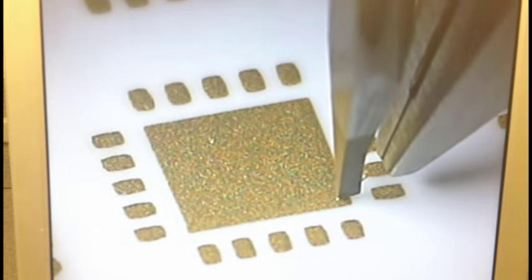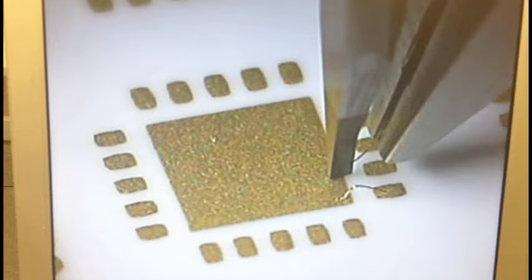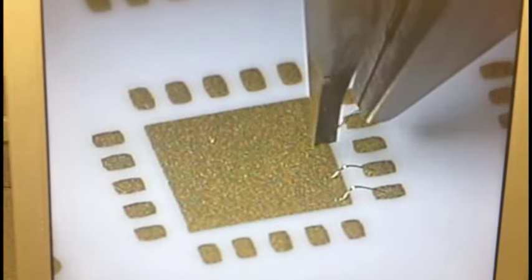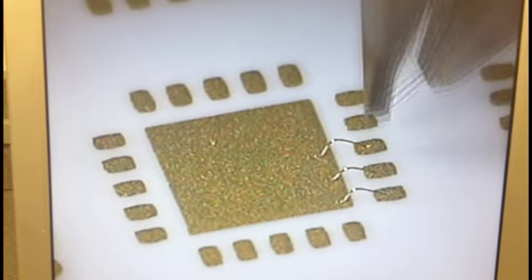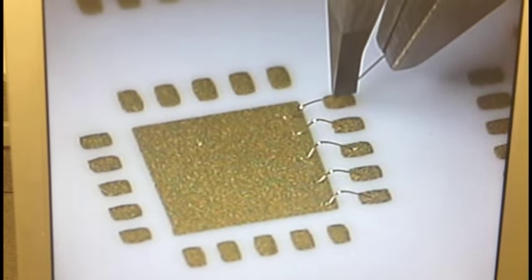We can bond gold, aluminum, and copper wire in diameters starting from 17 micron to 50 micron, as well as ribbon wire from 12 by 50 micron up to 25 by 250 micron.